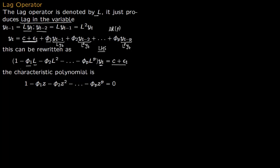You can rewrite this as a characteristic polynomial. Instead of L, you write z, where z is a complex number. This gives you the characteristic polynomial of the AR(p) process.